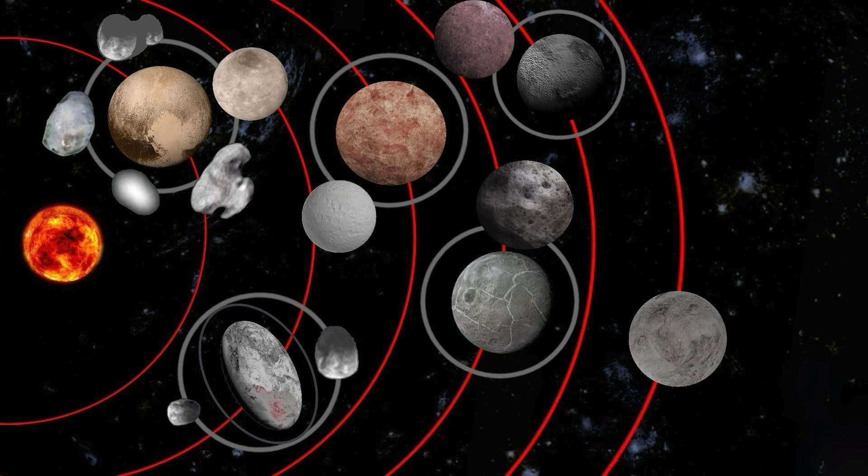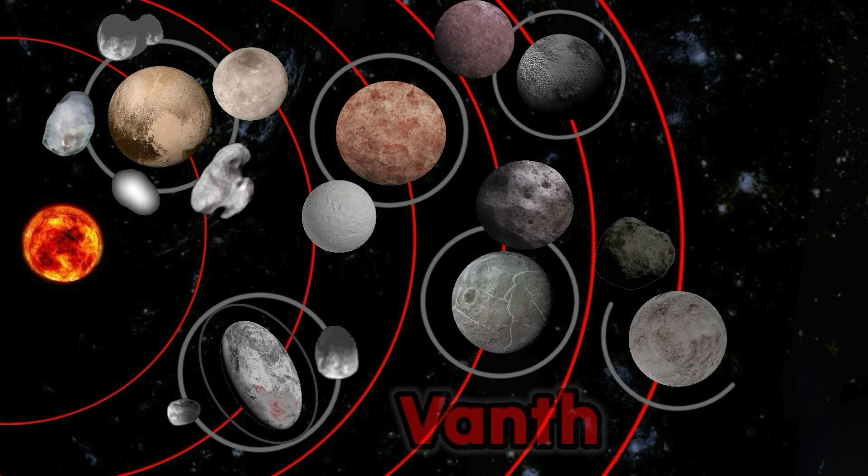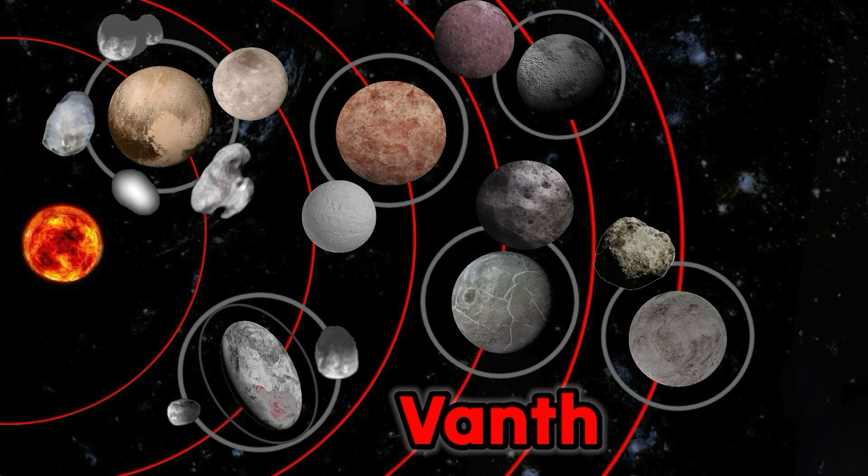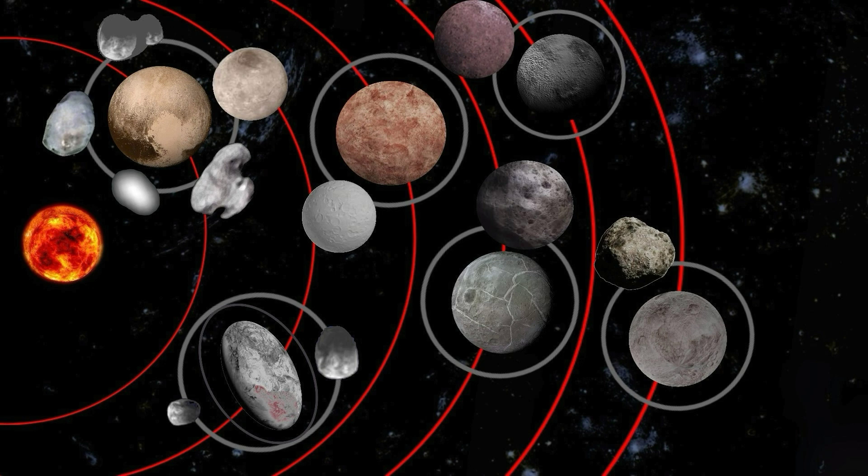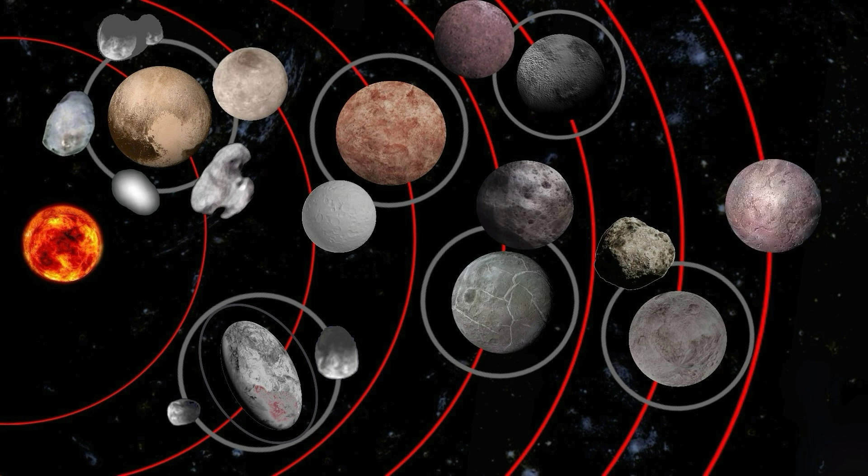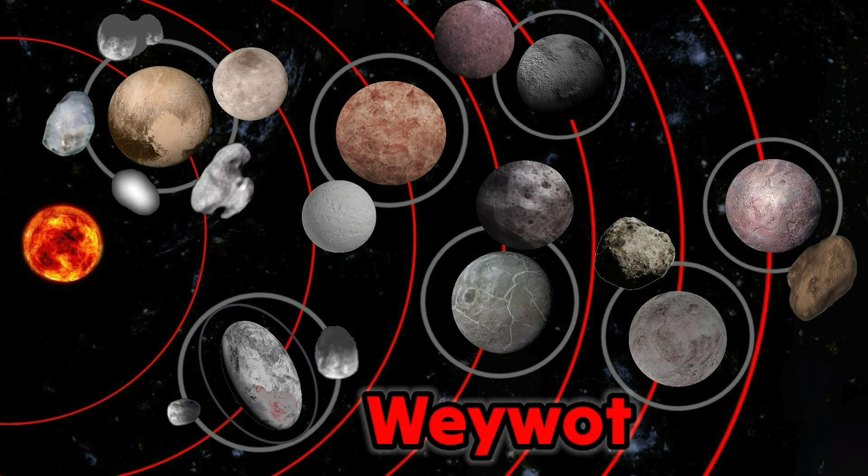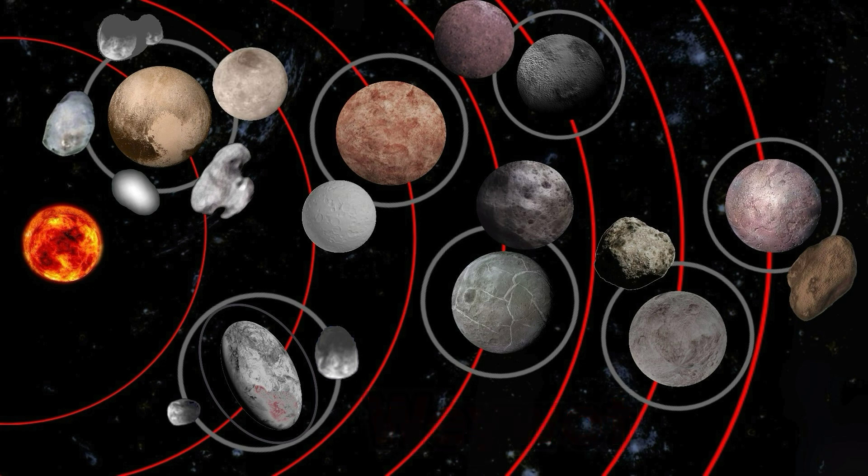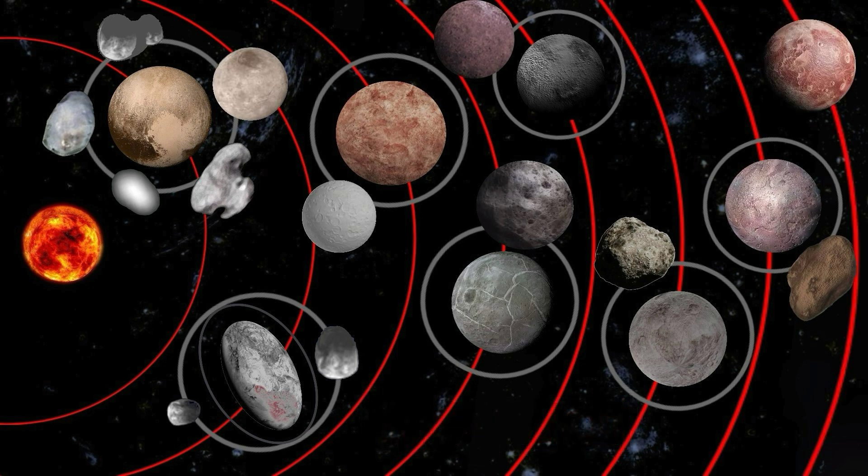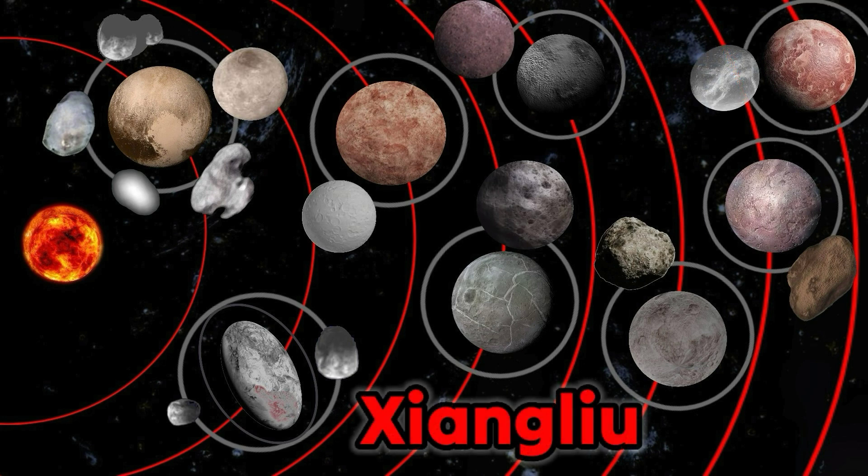Orcus has 1 moon: Vanth. Quaoar has 1 moon: Weywot. Gonggong has 1 moon: Xiangliu.